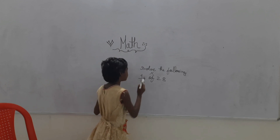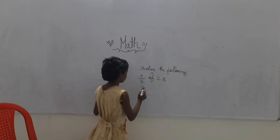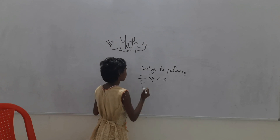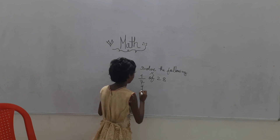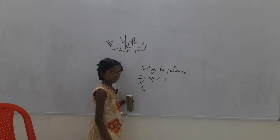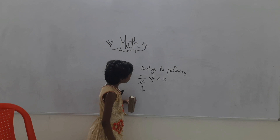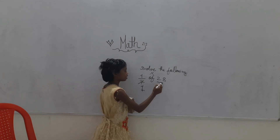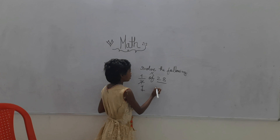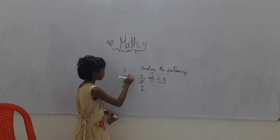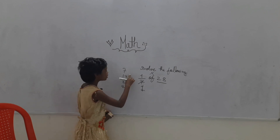7 ones are 7. How many times do you say the 7 tables? 7 to 7, 7 to 14, 7 to 21, 7 to 24.